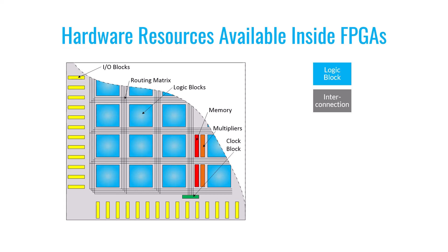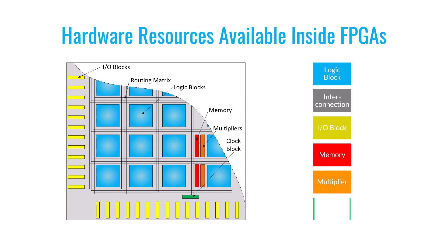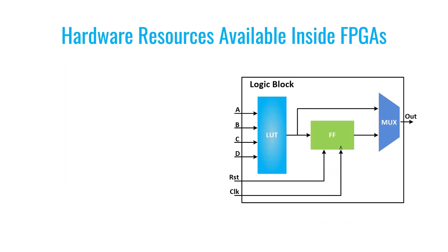Moving on, we have IO blocks, which are circuits located behind each of the FPGA's pins. After that, we have memory blocks and digital multipliers. Finally, we have clock resources. Now let me give you a brief explanation of each of these components.